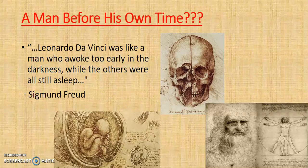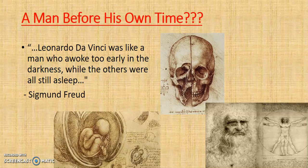Freud described da Vinci as 'the man who awoke too early in darkness while the others were still asleep.' In his last years, when a French army captured Milan, Leonardo had to leave. He went to Florence and Rome, but younger artists such as Michelangelo and Raphael were becoming more popular. The King of France then invited Leonardo to France to work for him, and he died there three years later in 1519. That concludes today's episode on Leonardo da Vinci — thank you for listening, and I'll be back with another episode real soon.